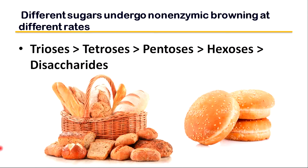Sucrose is a non-reducing sugar. It may be degraded to fructose and glucose during heating and still measurably contribute to Maillard browning reactions. Amino compounds exhibit variable reactivity according to their basicity. Ammonium ions react with reducing sugars more readily than amines, while secondary amines give different reaction products than primary amines. Proteins, peptides, and amino acids may all participate in the Maillard reaction.